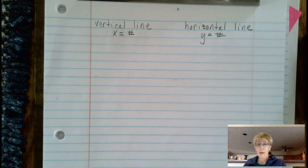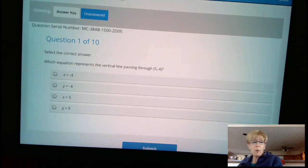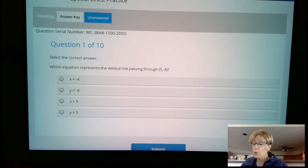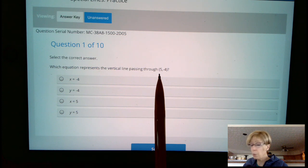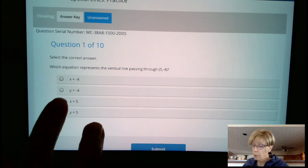Now we can actually go back and answer that question. If you look at this, what it says is which equation represents a vertical line. Vertical, we just said, has to be an x equals. And the x value in our point here is 5. So our answer to this problem is x equals 5.